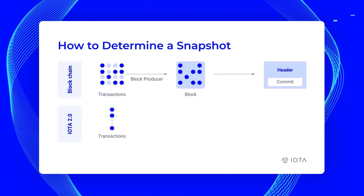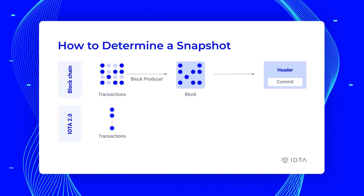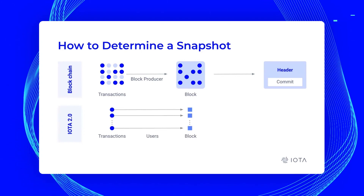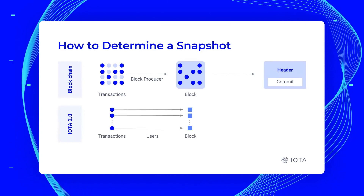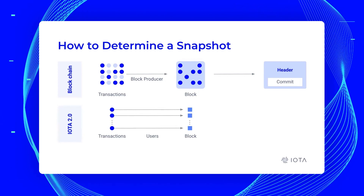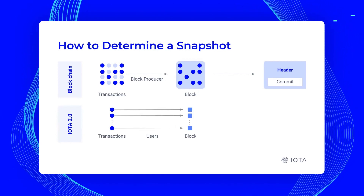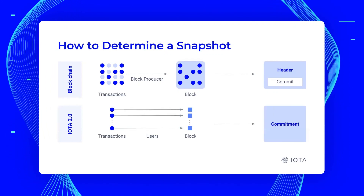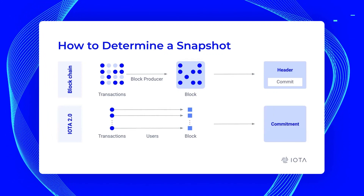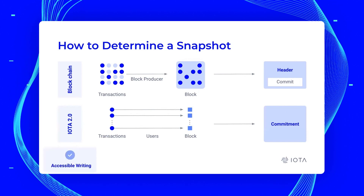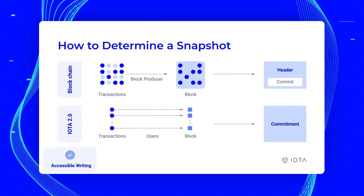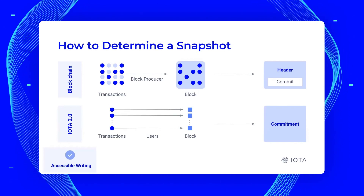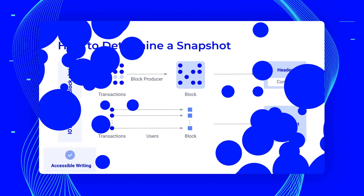In IOTA 2.0, we want to bypass this block producer oligopoly. Every user takes their own transaction and creates their own block. Therefore, we bypass the block producer step by having users produce their own blocks, and we take all these blocks down to create a commitment. This is the principle of accessible writing — you can write to the ledger yourself without having to go through another party.